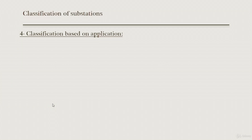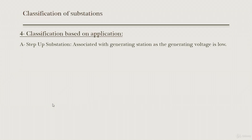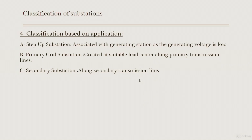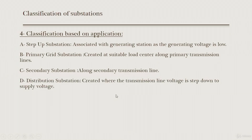The fourth classification is based on application. A step-up substation is used with generating power plants, since the generating voltage is low — for example 3.3 kV or 11 kV — and needs to be stepped up. The primary grid substation is located at a suitable load center along the primary transmission lines. The secondary substation is located along the secondary transmission lines.